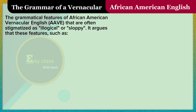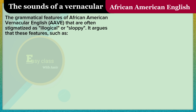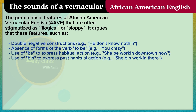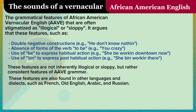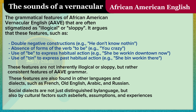The grammatical features of African American Vernacular English (AAVE) that are often stigmatized as illogical or sloppy are actually consistent. These features include: double negative constructions (e.g., 'he don't know nothing'), absence of forms of the verb 'to be' (e.g., 'you crazy'), use of 'be' to express habitual action (e.g., 'she be workin' downtown now'), and use of 'been' to express past habitual action (e.g., 'she been workin' there'). These features are not inherently illogical or sloppy, but rather consistent features of AAVE grammar, also found in other languages and dialects such as French, Old English, Arabic, and Russian. Social dialects are not just distinguished by language, but also by cultural factors such as beliefs, assumptions, and experiences.